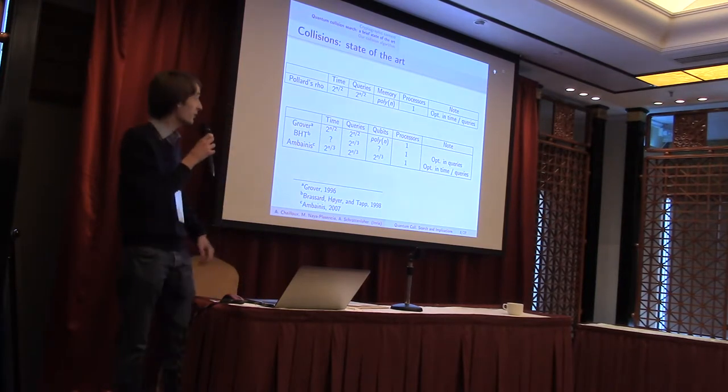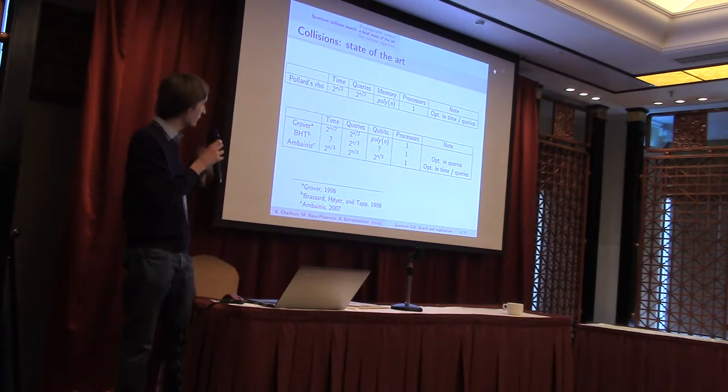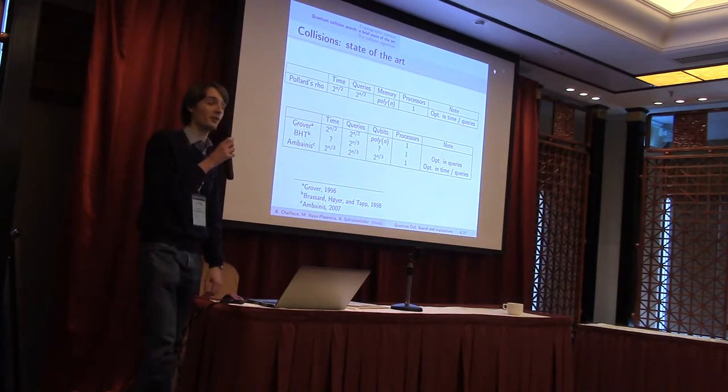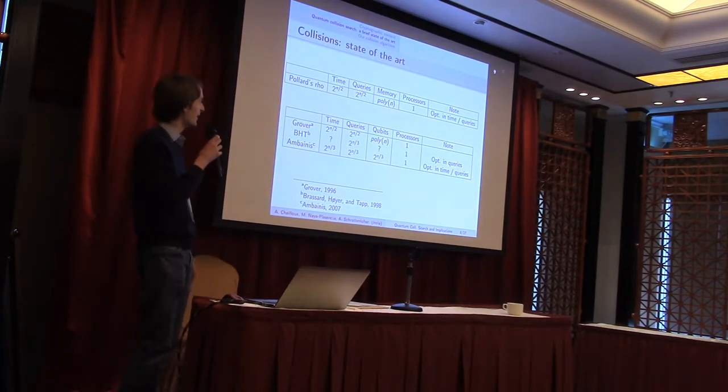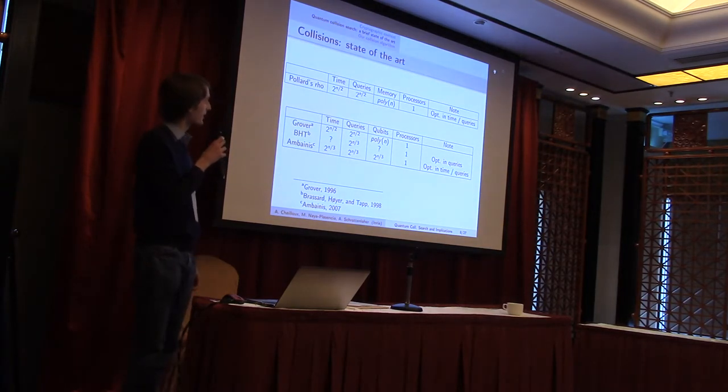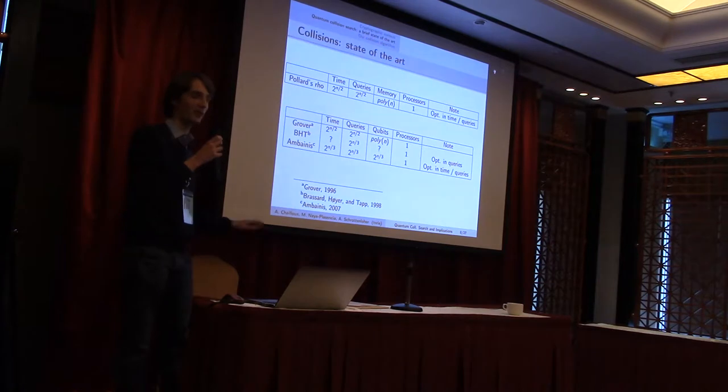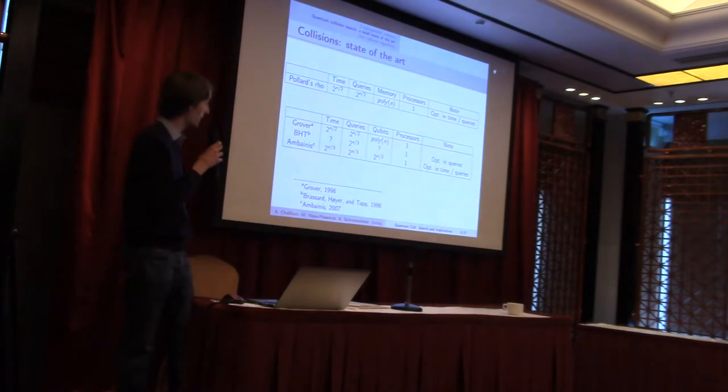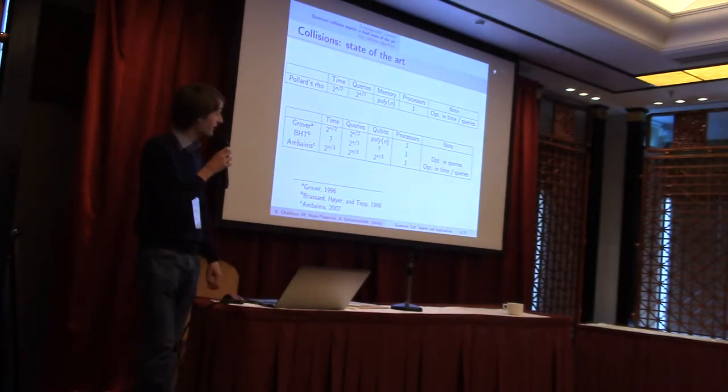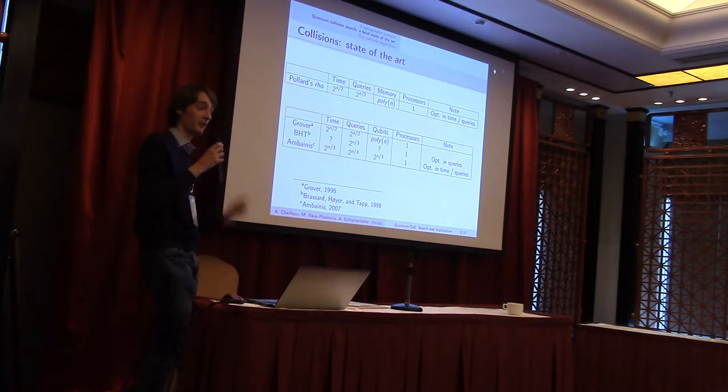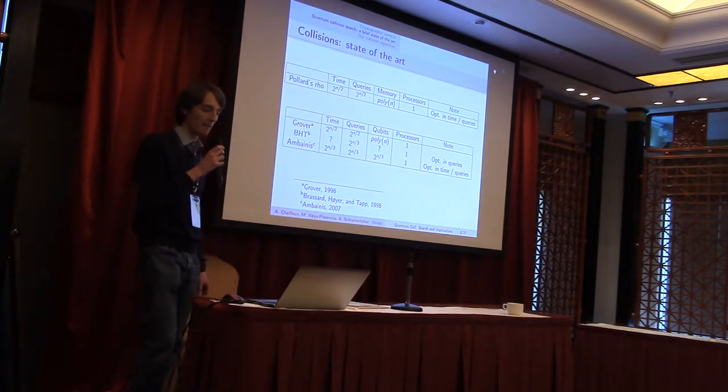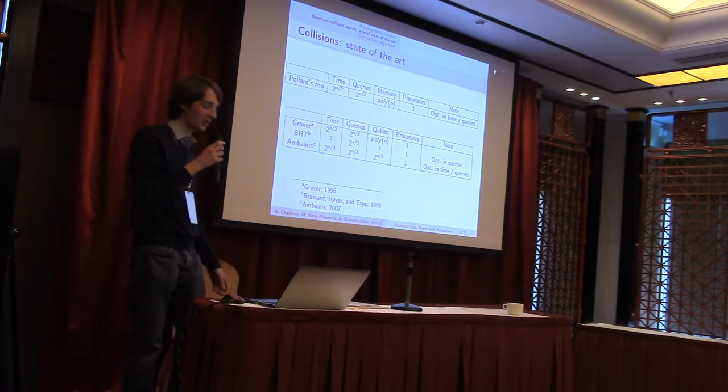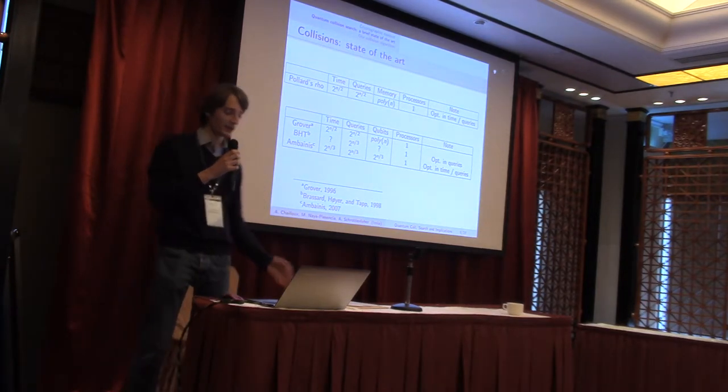And what can be done in the quantum setting? We have Pollard's rho there. If you want to apply Grover's algorithm to search for collisions, actually this doesn't help. The time complexity and the query complexity is 2 to the n over 2. But, we have this algorithm by Brassard, Høyer, and Tapp, which we saw earlier, which gives you a query complexity 2 to the n over 3, which is actually optimal. But, they didn't precisely analyze the time complexity and qubits used. And we'll go back on this later.